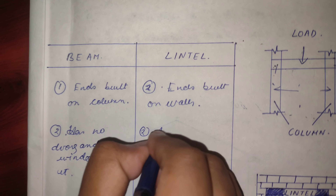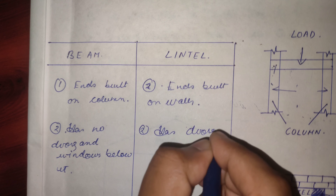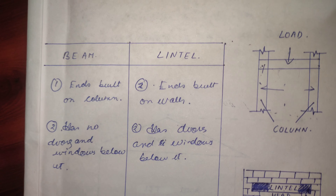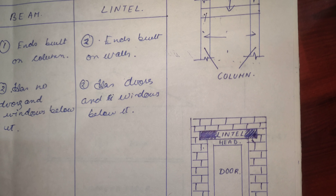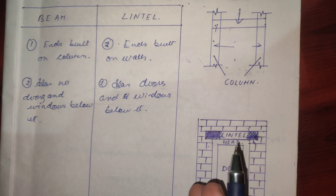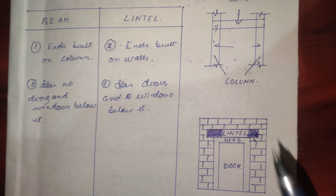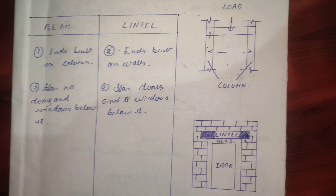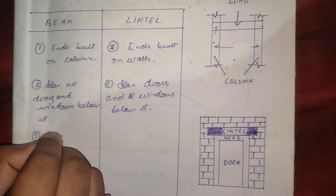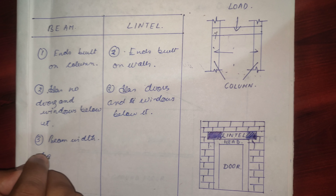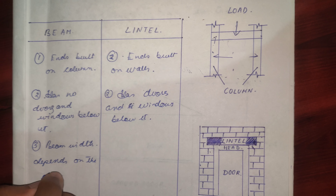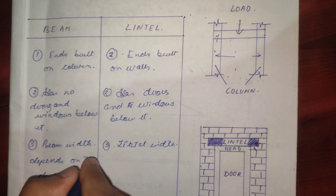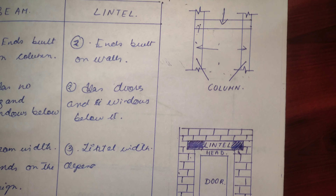The first difference: the ends of the beam are built on columns, because the load of the beam is transferred to the columns directly. The ends of a lintel are built on the walls, because the lintel transfers the load of the bricks to the sides of the walls. So the first difference is ends built on columns versus ends built on walls.